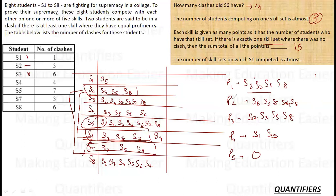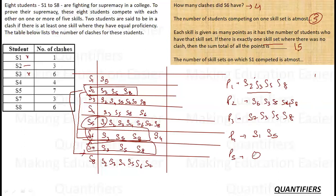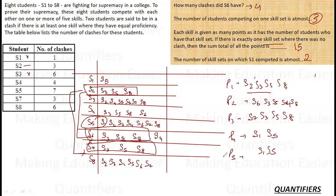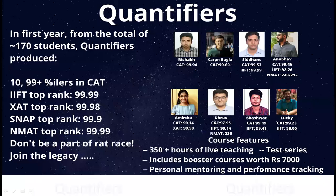The question about the number of skills on which S1 competed uses the phrase 'at most.' S1 competed on P4, and it's also possible S1 competed on P5 — so the answer accounts for both possibilities. This brings an end to a very interesting DILR set. I hope you've understood the concept. Please subscribe to our channel, and if you wish to join our course, use the link in the description. Thank you, and have a great day!